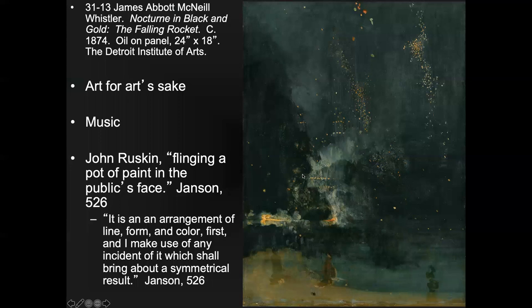Going along with that, Whistler uses musical terms. 'Nocturne' is a musical term — it was a popular type of piano form at that time, like Chopin. If you look up Chopin nocturnes, you'll find some good pieces. One of his works is called Nocturne in Black and Gold: The Falling Rocket.